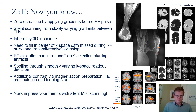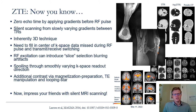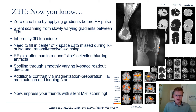In summary: ZTE is achieved by applying gradients before the RF pulse. Silent scanning is enabled by slowly varying gradients between TRs. It is inherently 3D and requires filling the center of k-space. Care must be taken with RF excitation to avoid slice-selection blurring artifacts, addressed through design parameter choices or advanced tricks. Spoiling is achieved through smoothly varying k-space readout directions. Additional contrast dimensions are opened up by magnetization preparation, TE manipulation, and the looping star approach. Thanks for listening — now go impress your friends with your silent MRI scanning knowledge!